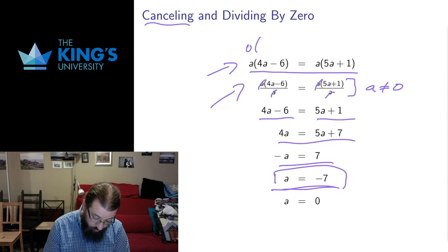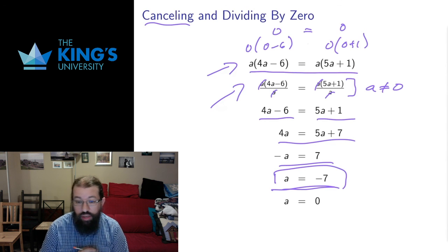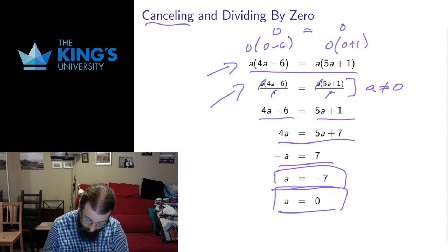If I put in 0 here, I get 0 times 0 minus 6, and I get 0 times 0 plus 1. I get 0, I get 0. Those two are equal. 0 does in fact equal 0. So a equals 0 is also a solution.